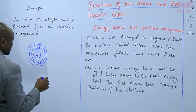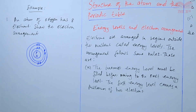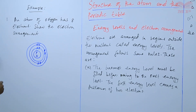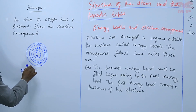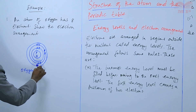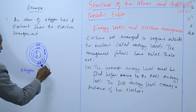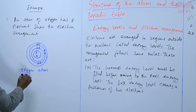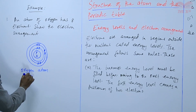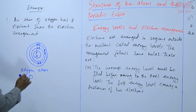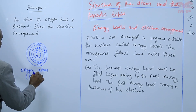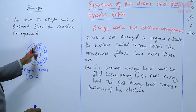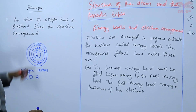Six electrons placed — so this is an oxygen atom. We write it as O: two electrons in the first energy level.